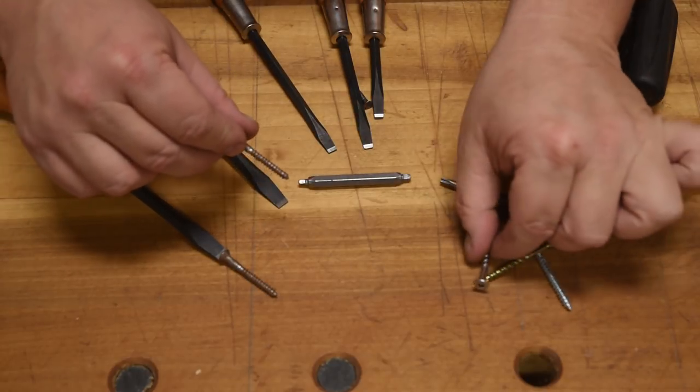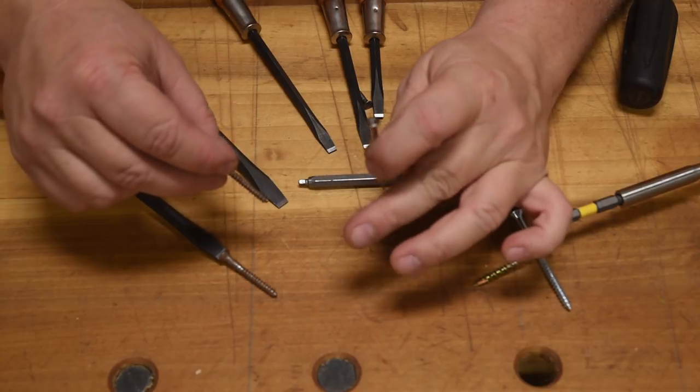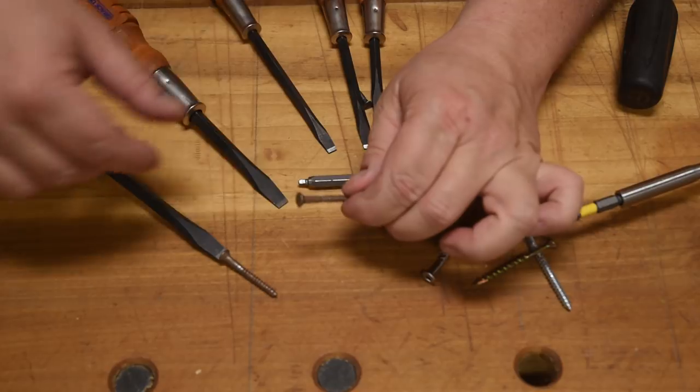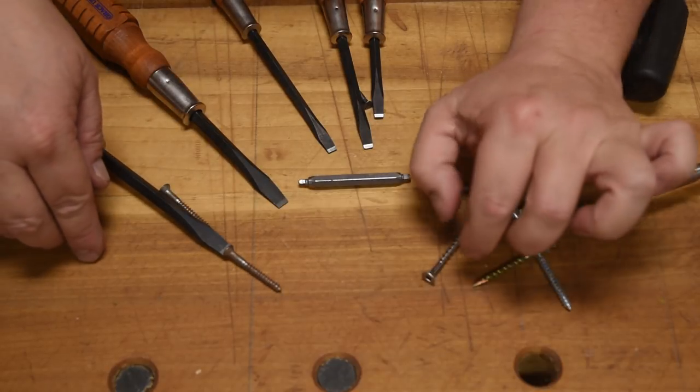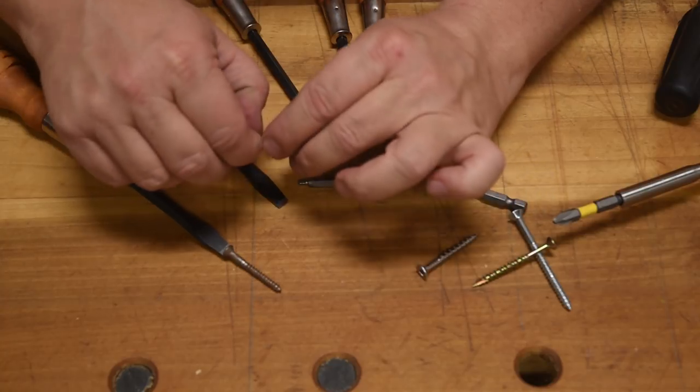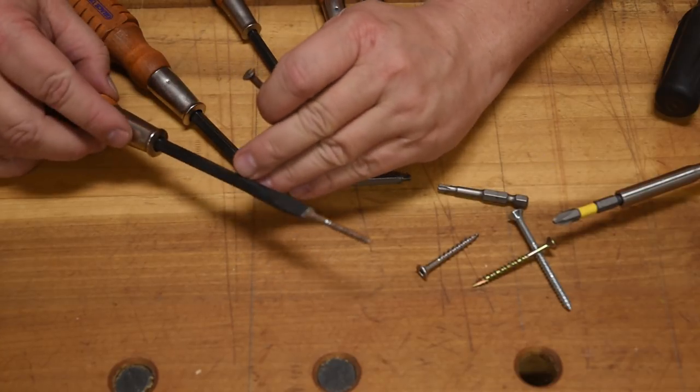And it boggles my mind that people spend $200 on the wood of a table, and they're going to use screws, so they start skimping. Instead of spending 10 cents per screw, they want to spend a penny on a screw. Come on guys, spend a little money, get a good fastener, and buy the tools that go with them.